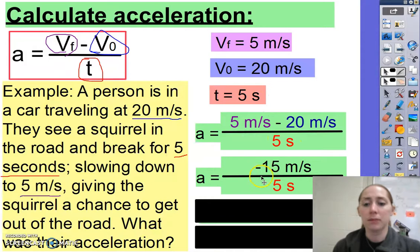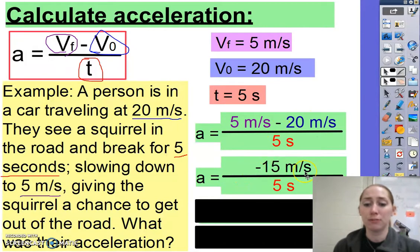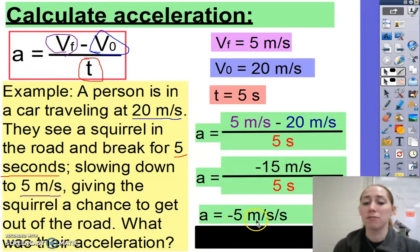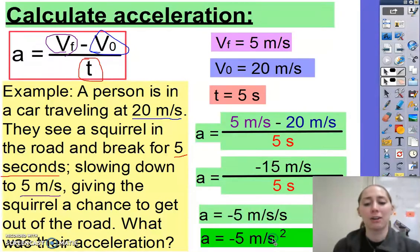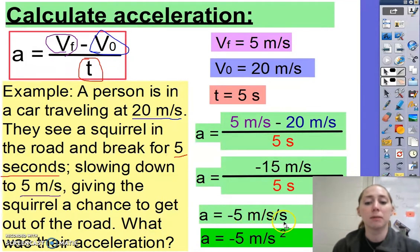Then you simplify. Five minus 20 meters per second gives us negative 15 meters per second, divided by five seconds, giving us negative five meters per second per second, which we write as negative five meters per second squared. Acceleration's SI unit is either meters per second per second or meters per second squared — they mean the same thing.